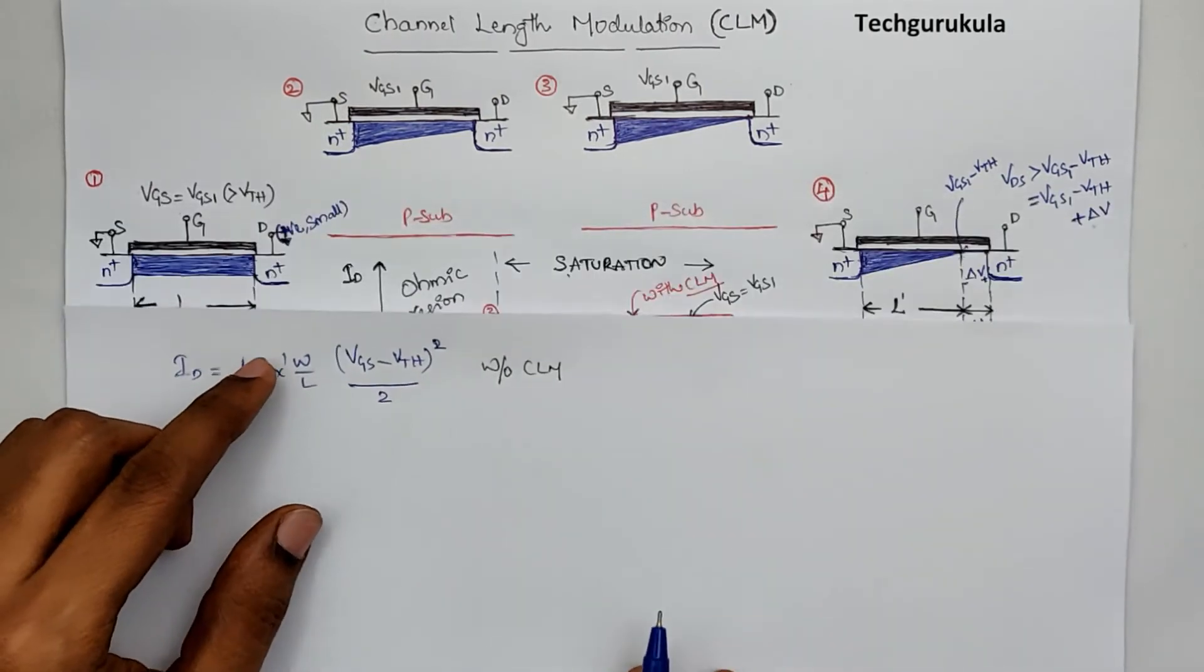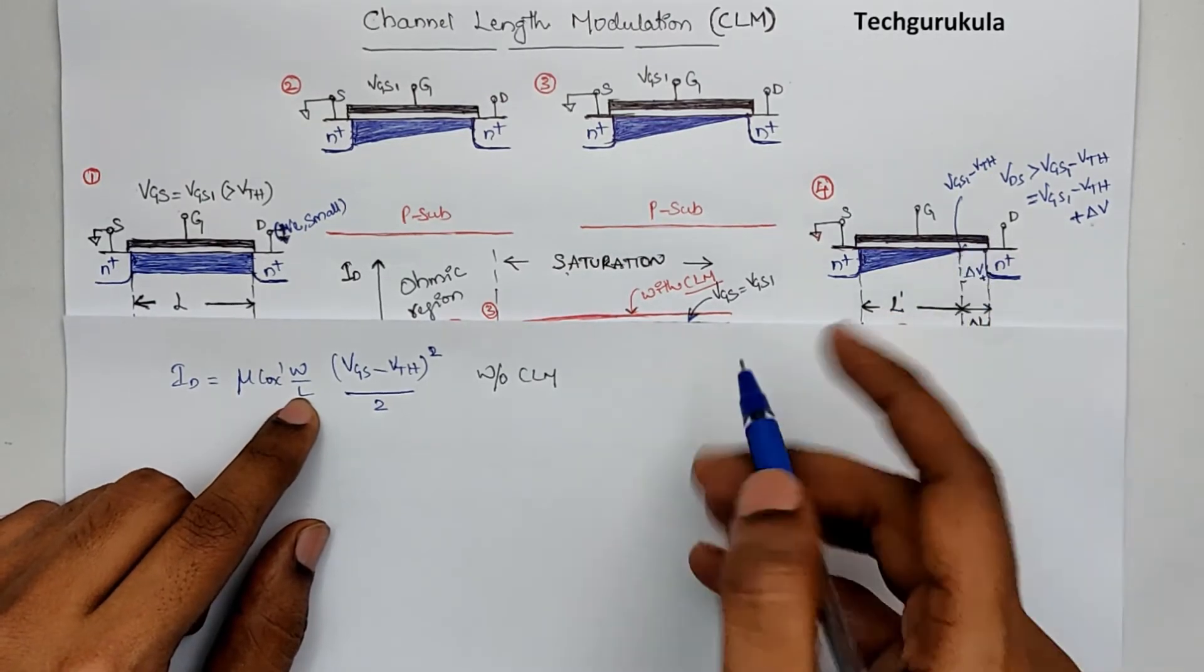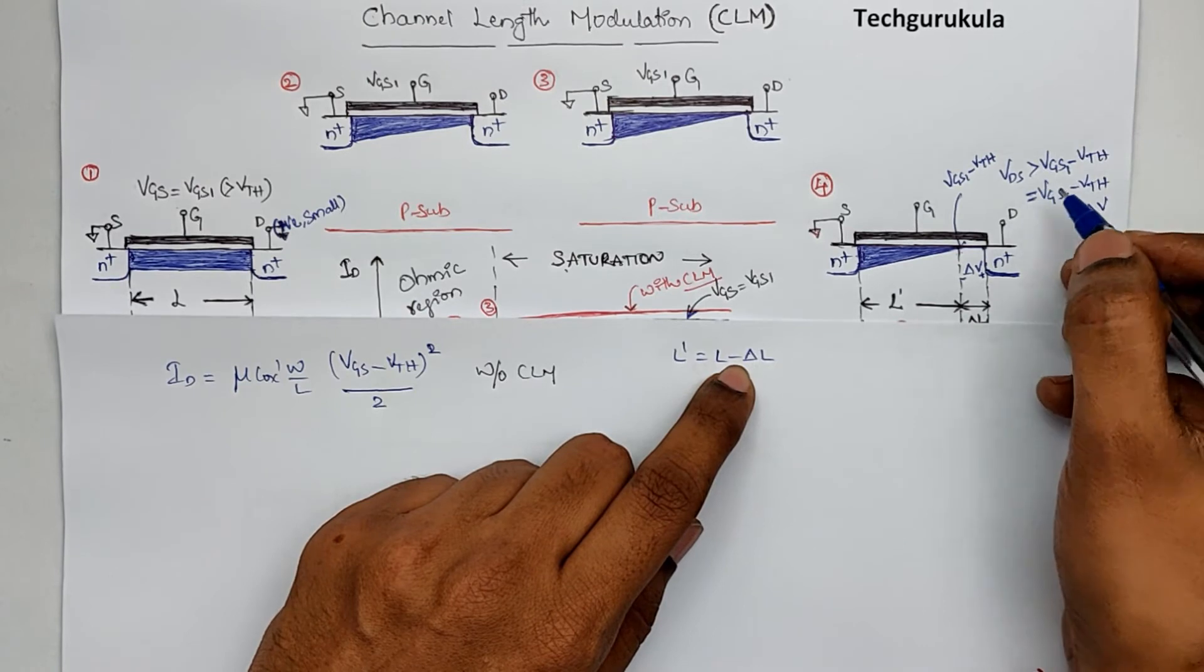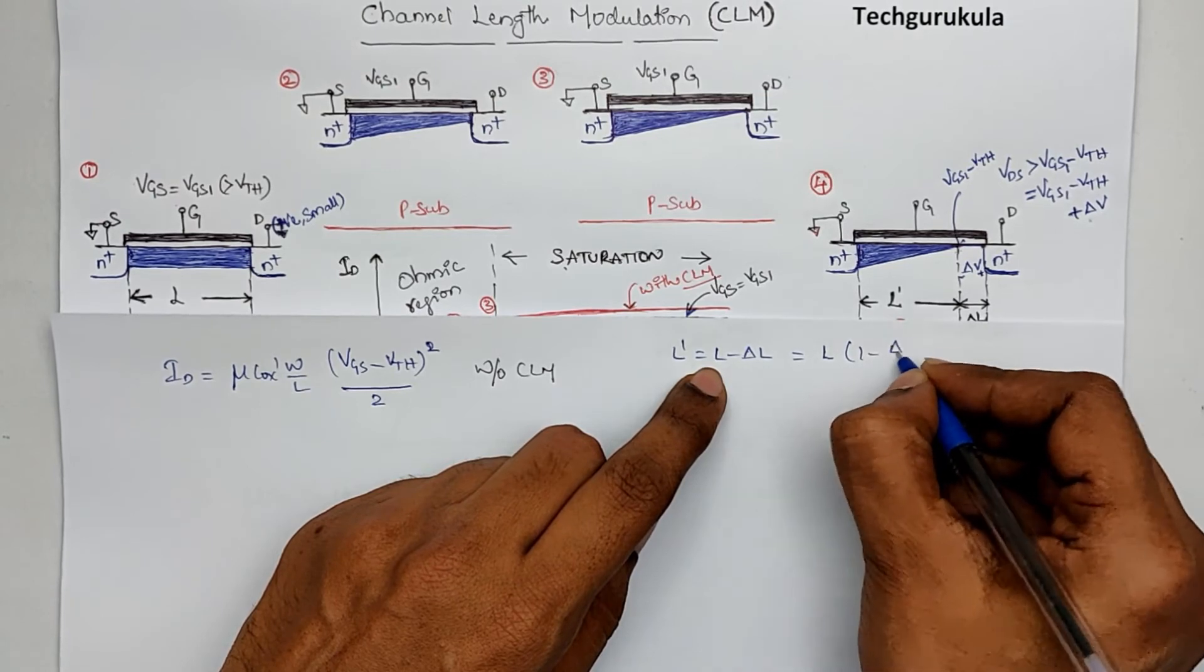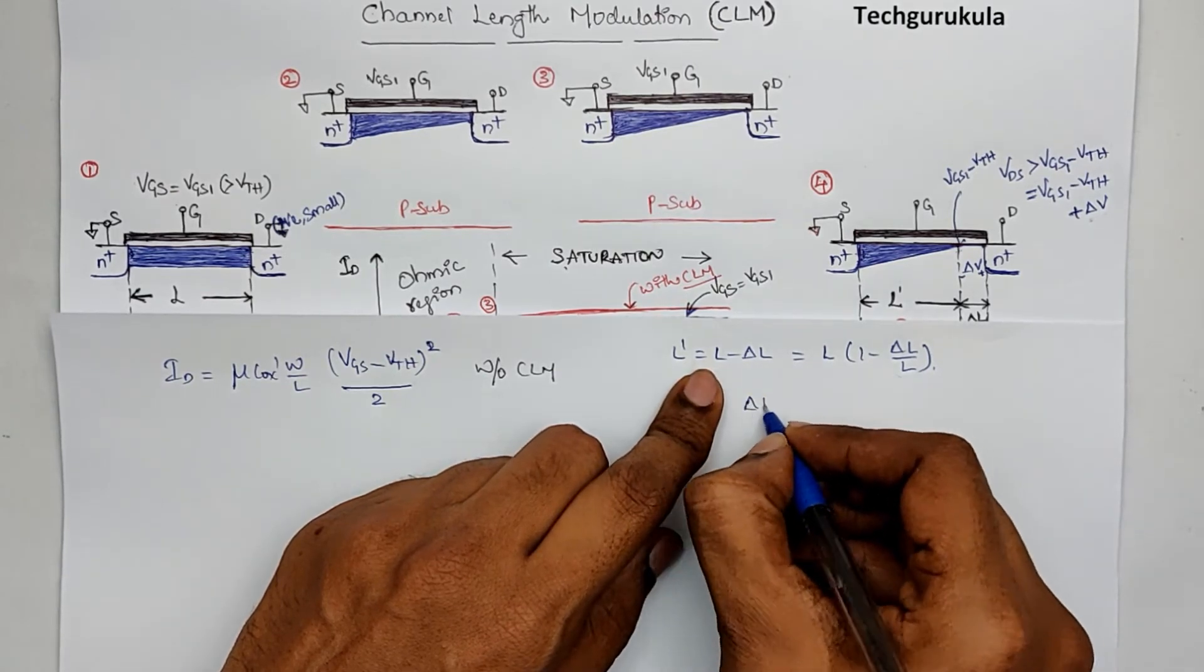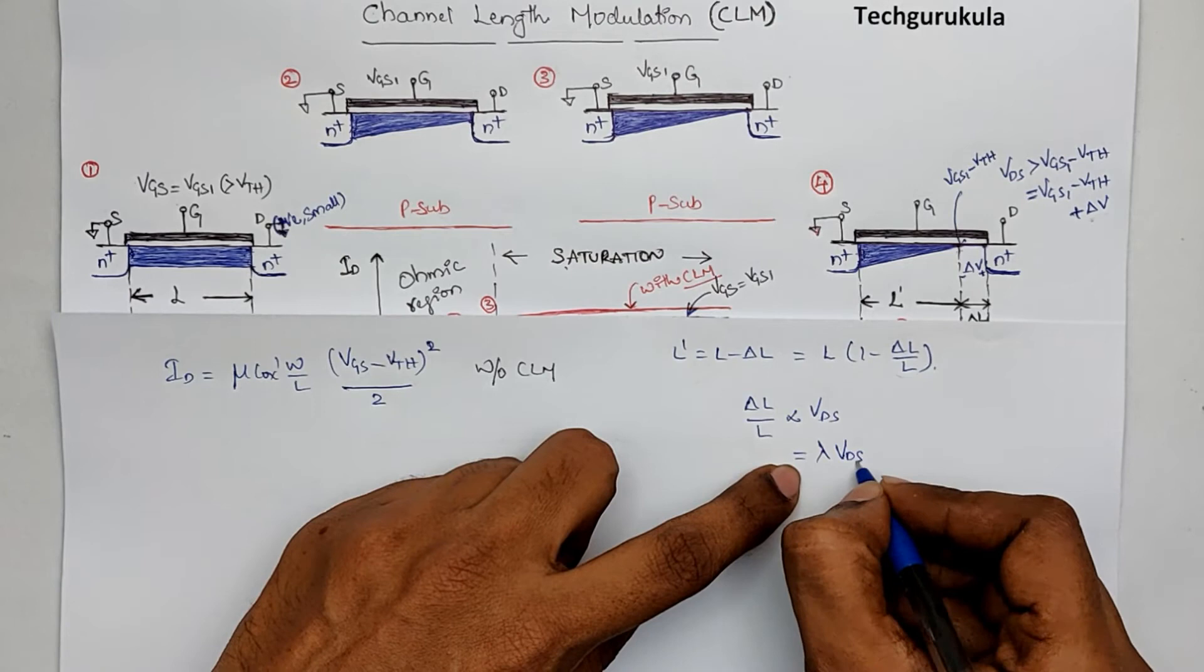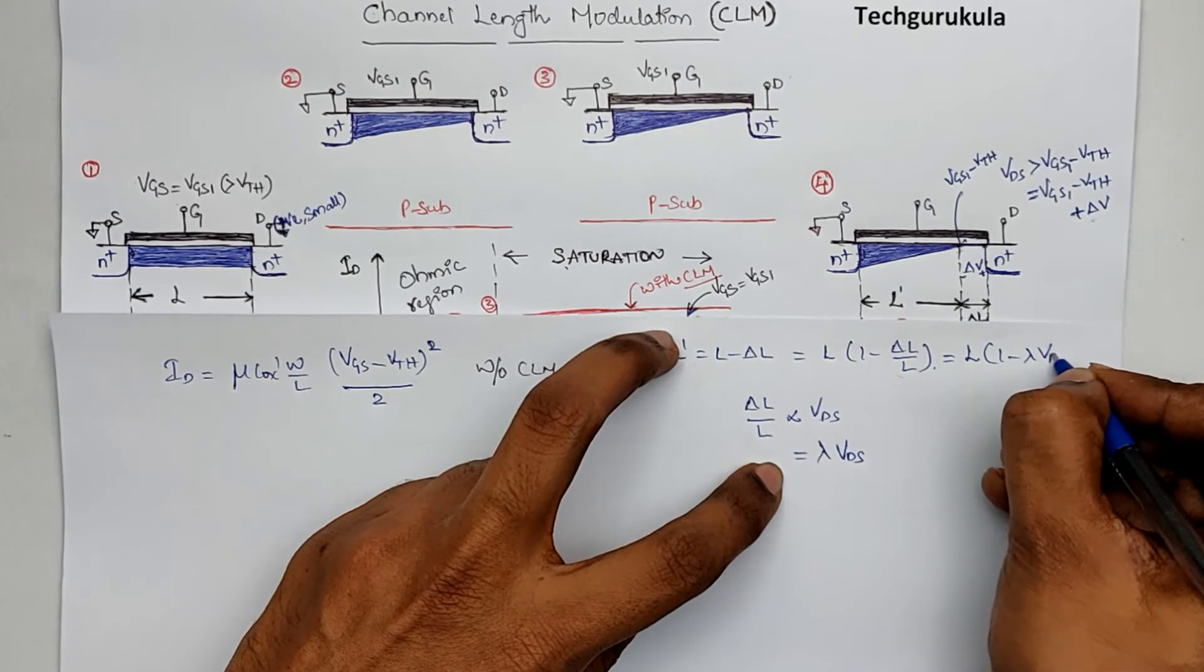Now we know that the channel length has reduced. So we are going to take the L is equal to L prime. In fact L prime is equal to L minus delta L. Of course this delta L is a function of VDS. That's why it is called channel length modulation. So this can be written equal to L taking common 1 minus delta L over L, which is normalized value here. And of course this delta L over L will be directly proportional to VDS. So we can equate this with a proportionality constant called lambda times VDS. So this can be equated again as L times 1 minus lambda VDS.